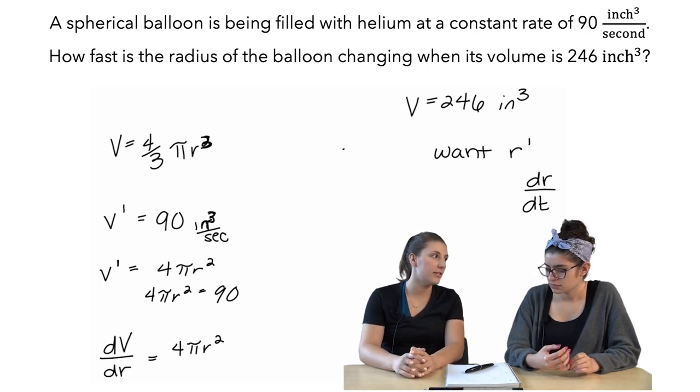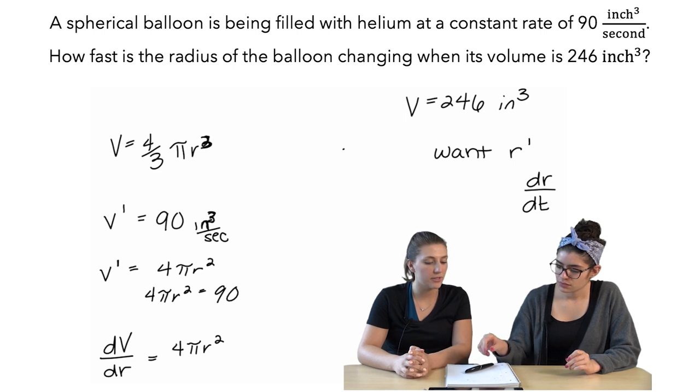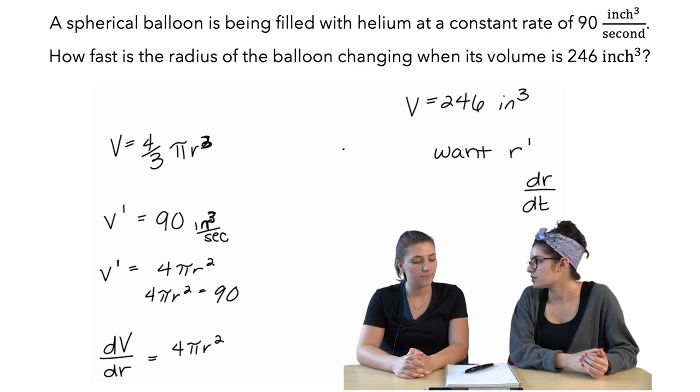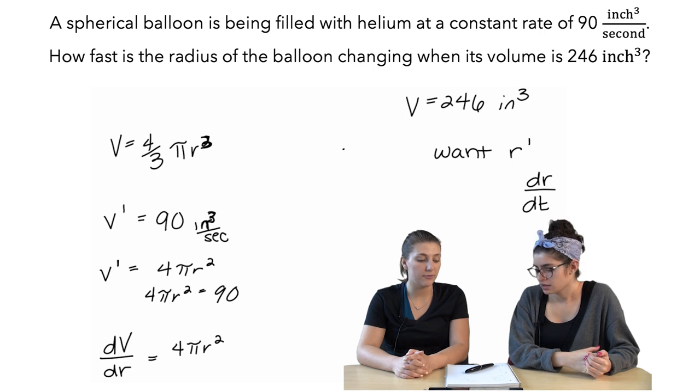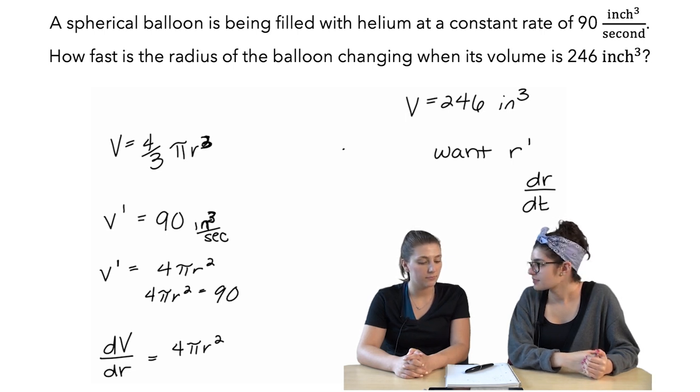Yeah, I think it's just that we want dr dt, and we have dv dr. I don't really know how to get to switch in between them. Oh, okay. So, you want to use dv dr to get dr dt. I think so. I don't know how to do that.